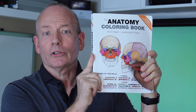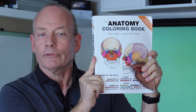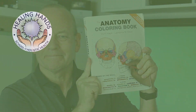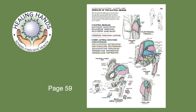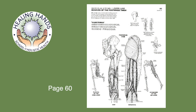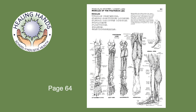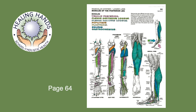The coloring book is another resource you're going to use to learn the anatomy for circulatory massage. Here are the specific pages for this section: on page 59, you have gluteus minimus, gluteus medius, gluteus maximus, piriformis, tensor fascia latae, and iliotibial tract. On page 60, biceps femoris, semitendinosus, and semimembranosus — the hamstrings. On page 64, gastrocnemius and soleus.